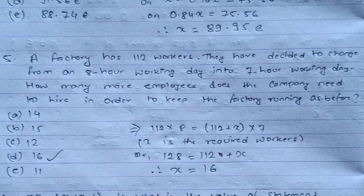Question five is from time and work: a factory has 112 workers who have decided to change from an eight-hour working day to a seven-hour working day. How many more employees does the company need to hire to keep the factory running as before? We assume the additional required workers to be x. So 112 times 8 equals (112 + x) times 7. Solving for x gives x equals 16, which is the required additional workers. The correct answer is option D.